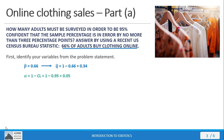Our alpha level is 1 minus the confidence level, and our confidence level is 95%, so our alpha is 5%. That means our critical value Z-score is going to be 1.96. Our margin of error is 3 percentage points — keep in mind it says 3 percentage points, not just 3 points. So now we've got everything we need to calculate our sample size.